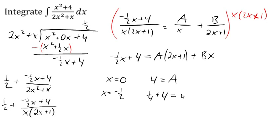Combining that, that's 17 fourths equals negative 1 half B. Multiplying both sides by negative 2 gives me B is negative 17 half.